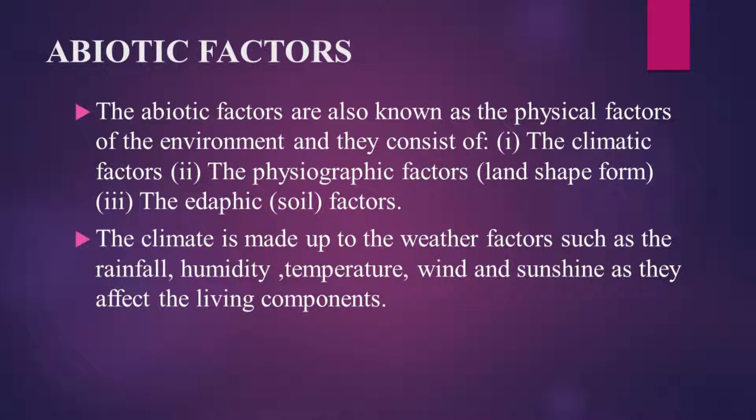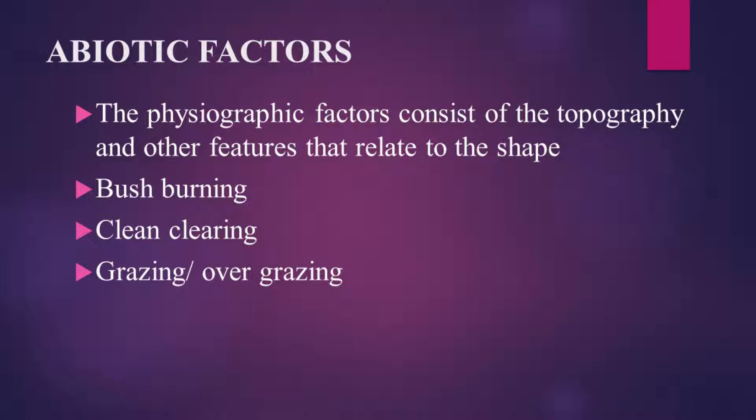The abiotic factors are known as the physical factors of the environment, which include the climate factors, the physiographic factors, and also the edaphic factors — which is the soil factor. The soil factor covers everything that happens on the soil, such as bush burning, land clearing, grazing, and overgrazing. These are things done on the soil and are the physical factors of the environment under the abiotic factors.